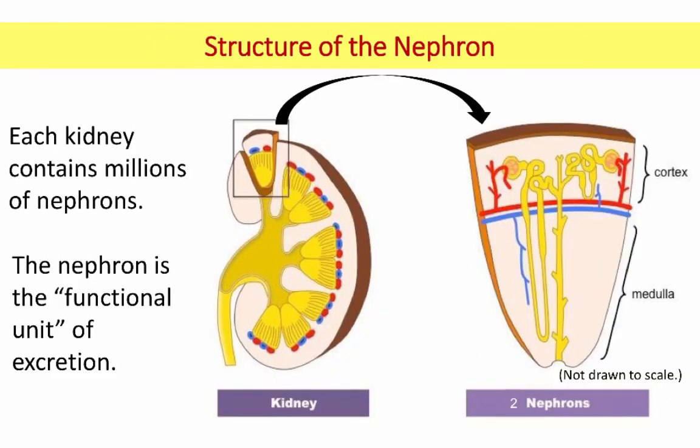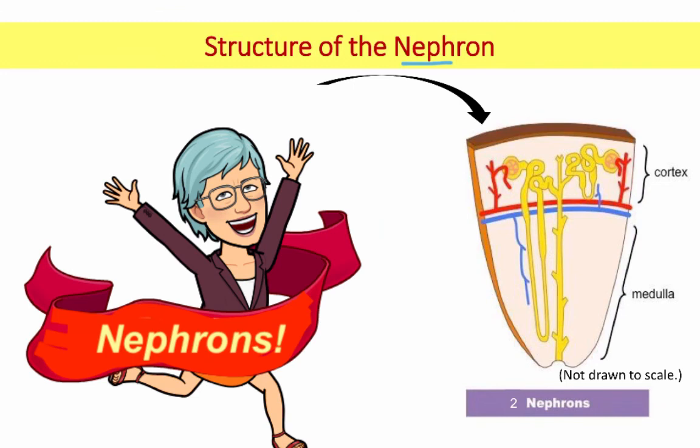All right, so in the next video we're going to dive into the filtering unit — the functional unit of the kidney — which is called the nephron. Nephron is another prefix you want to associate with the kidneys, so nephritis means inflammation of nephrons, and so on. Video number two will jump into the nephron.